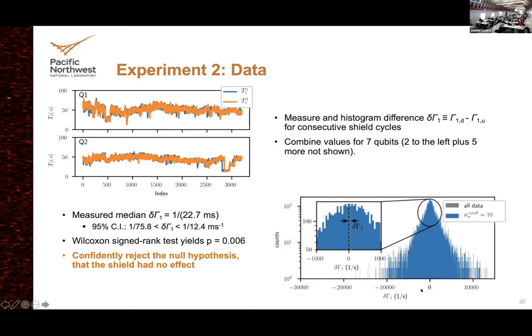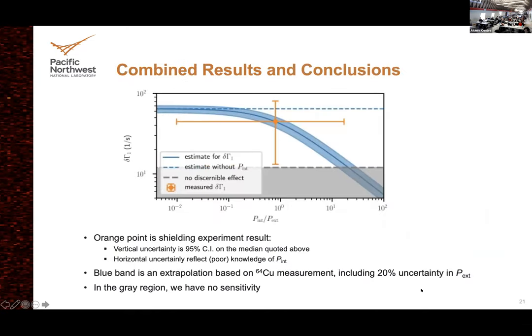Summarizing both experiments: we have one data point with fairly large error bars, but it is not consistent with no effect. If you solved all the other problems in superconducting qubits, you'd be stuck at four milliseconds from radiation. If you then shielded to get rid of radiation, you could gain an additional 12 to 75 milliseconds of coherence time — a small but statistically significant difference.